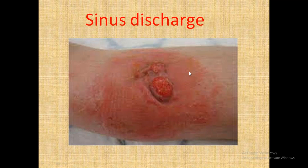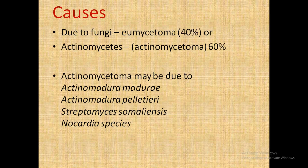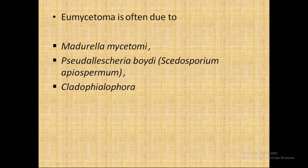Mycetoma may be due to fungi, that is eumycetoma, or bacteria, that is actinomycetoma. Eumycetoma accounts for 40% and actinomycetoma is more common at 60%. Actinomycetoma may be due to Actinomadura madurae, Streptomyces somaliensis, and Nocardia species. Eumycetoma is often due to Madurella mycetomatis and others.